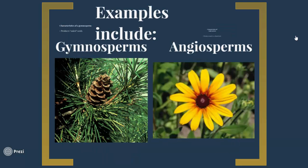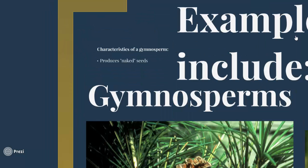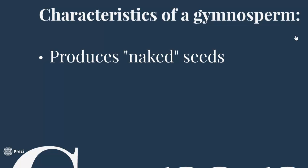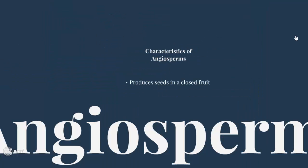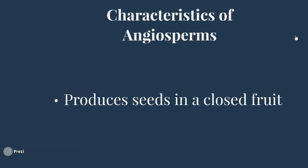When we speak about seed plants, we have gymnosperms and angiosperms. Gymnosperms produce naked seeds — seeds that are not covered or protected by a shell, such as the sunflower seed. Angiosperms produce seeds enclosed in a fruit, such as an apple, an orange, or a grapefruit.